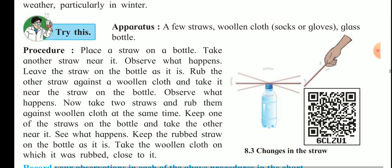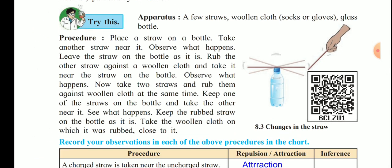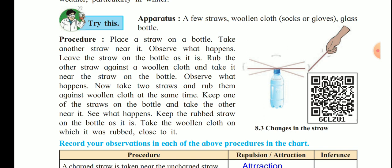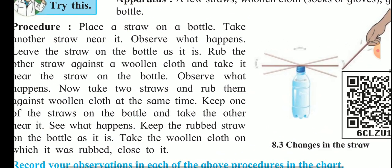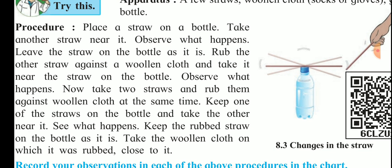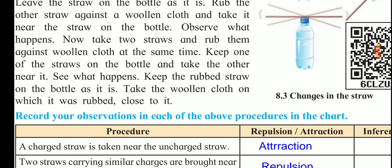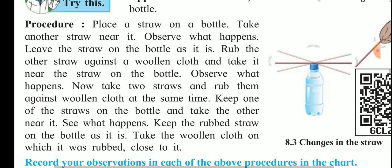For this experiment, take a few straws, a wooden cloth such as socks or gloves, and a glass bottle. Place a straw on the bottle as shown in the figure. Take another straw near it — since neither straw is charged, nothing happens. Now rub the other straw against a wooden cloth; being made of plastic, it becomes negatively charged. Take this negatively charged straw near the uncharged straw on the bottle — we see that there is attraction.